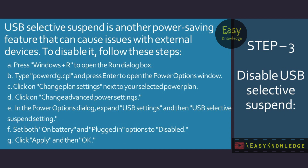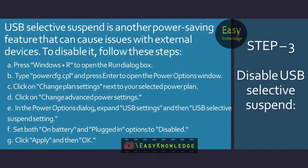Step 3: Disable USB Selective Suspend. USB Selective Suspend is another power-saving feature that can cause issues with external devices. To disable it, follow these steps. Press Windows + R to open the Run dialog box.